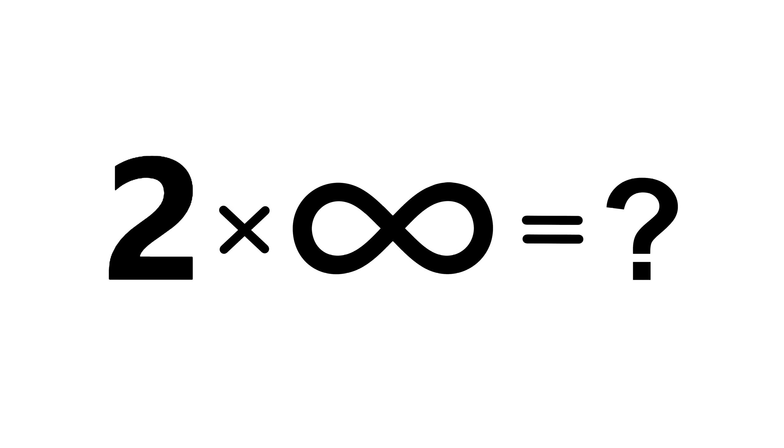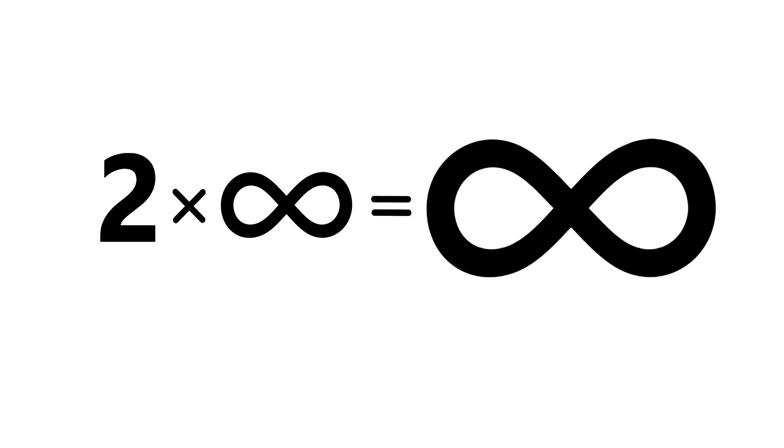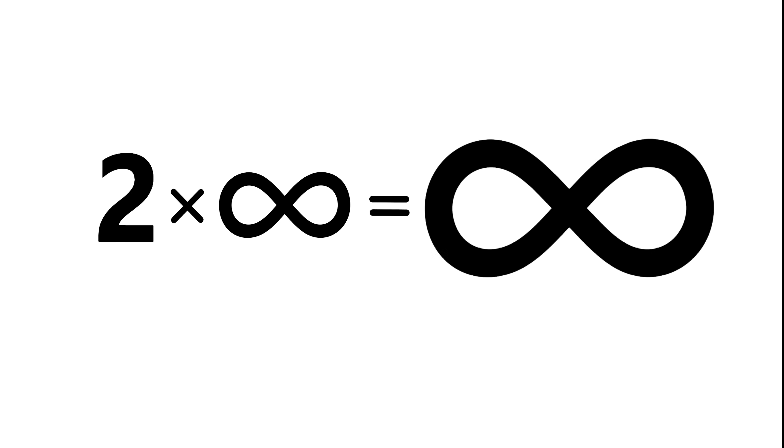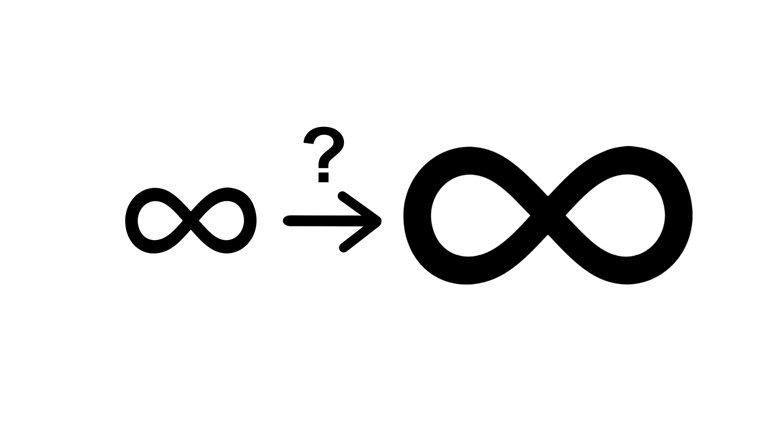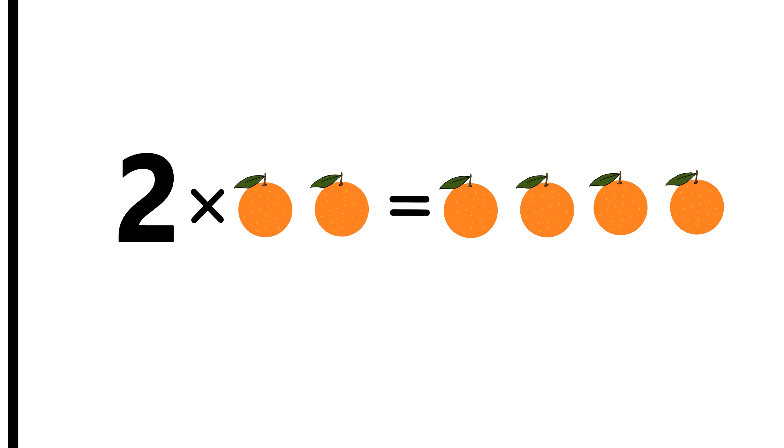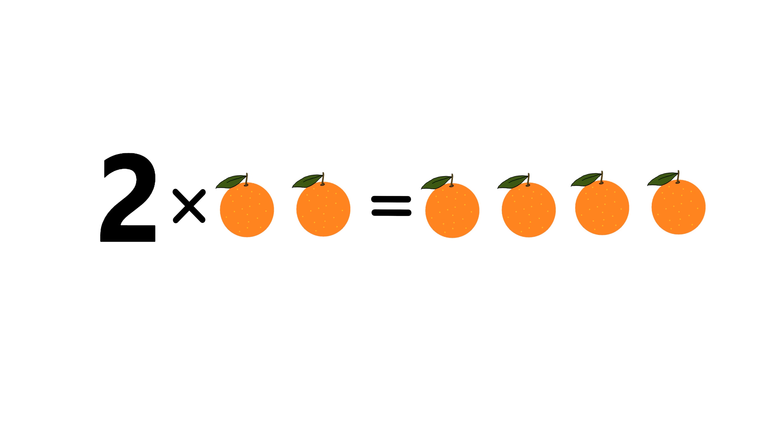What do you get when you multiply infinity by 2? Do you get an infinity twice as large as the original? But infinity is already infinite, as in it's not finite or limited, so how can you increase something that already doesn't have any limit in the first place? But at the same time, when you multiply something by 2, you obviously must be increasing its size, right? So which is it?